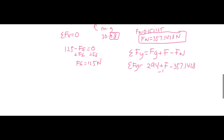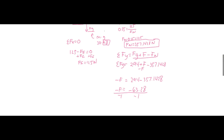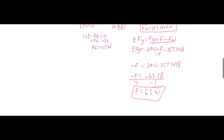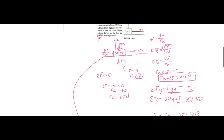If we have this, we can subtract f from here. So we have f is equivalent to 294 subtracted by 357.1428, and that will give us negative f equivalent to 63.28, divided by negative 1. I definitely messed up somewhere here but it does work out eventually. So f is equivalent to 63 newtons and that is going to be our answer — that is the applied force that we need.